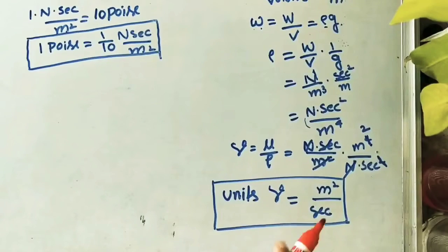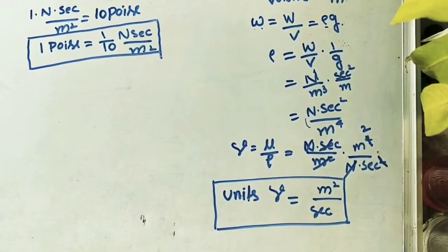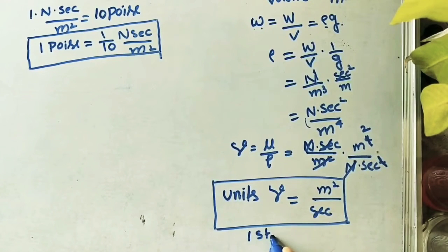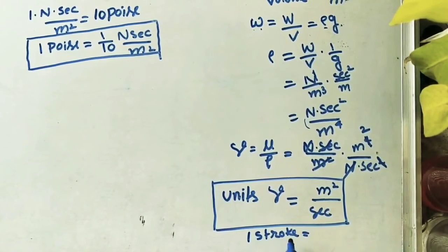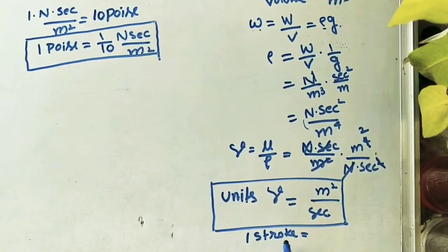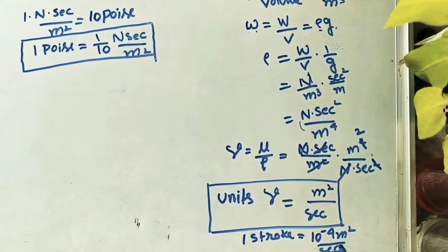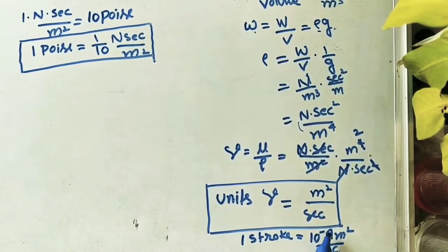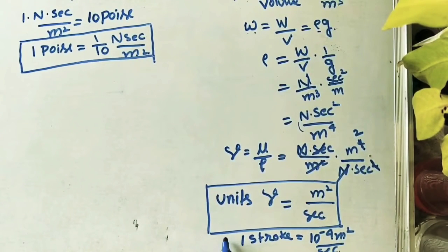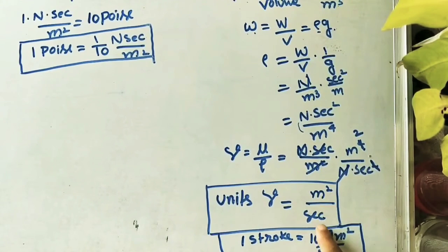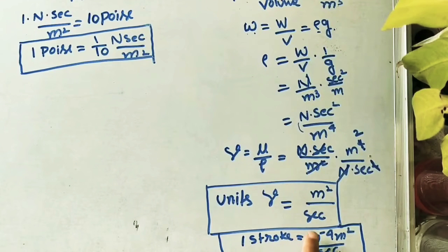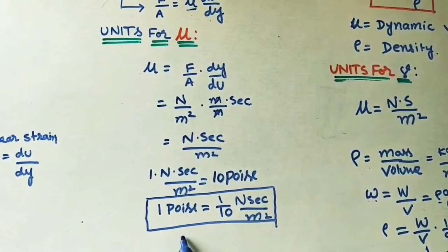Instead of m²/s, another unit used is Stoke. Note that in fluid mechanics, Stoke is different from the IC engine term — here 1 Stoke = 10⁻⁴ m²/s. So m²/s is the main unit, and sometimes problems give values in Stokes: for example, 1 Stoke = 10⁻⁴ m²/s, 10 Stokes = 10 × 10⁻⁴ m²/s, and so on.